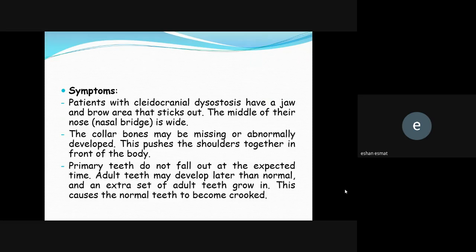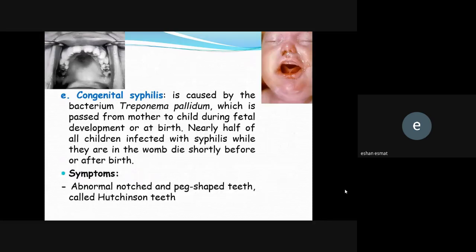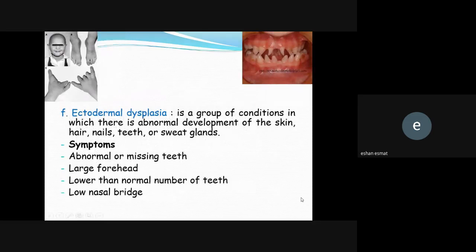Congenital syphilis is caused by the bacterium Treponema pallidum, which is passed from mother to child during fetal development or at birth. You can see abnormal notched teeth with a characteristic shape — these teeth are known as Hutchinson's teeth and are a specific sign of congenital syphilis.